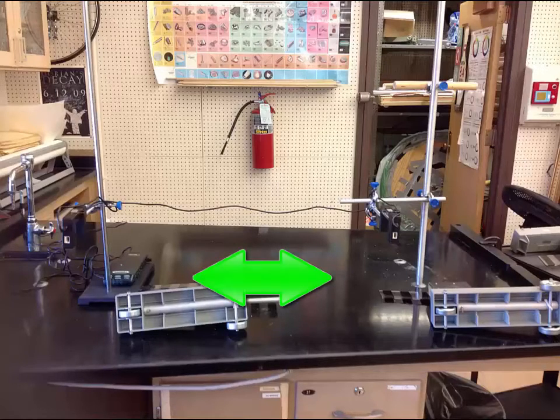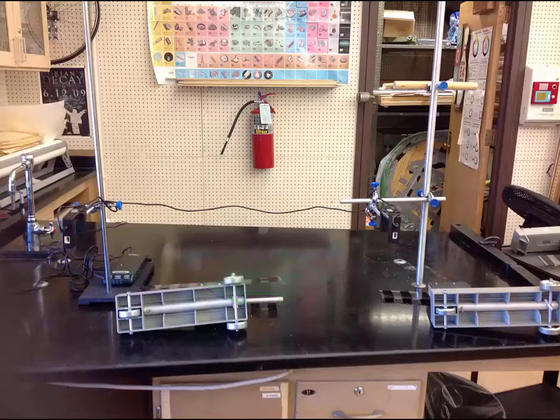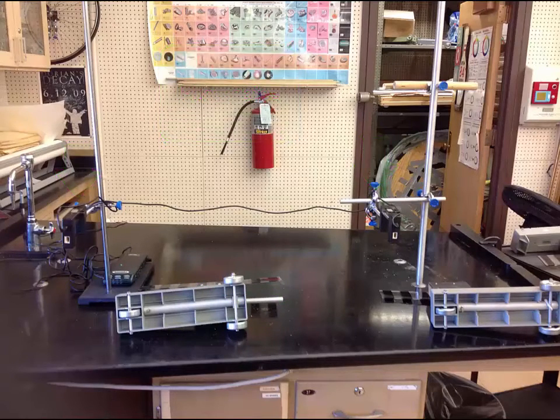Your setup is going to look something like this. You'll have two carts that start in the middle. You'll release a spring and then move underneath the photogates. The photogates are here attached to the poles.